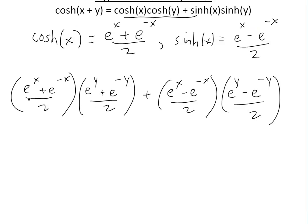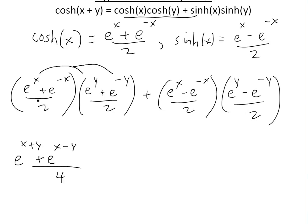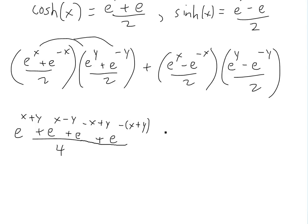Now we multiply these out. The denominators give us 2 times 2 equals 4, so we divide by 4. Using the FOIL method on the first product: e to the x times e to the y gives e to the x plus y — when you have the same base you add the exponents. Then e to the x times e to the negative y gives e to the x minus y. Then e to the negative x times e to the y gives e to the negative x plus y. And e to the negative x times e to the negative y gives e to the negative (x plus y).